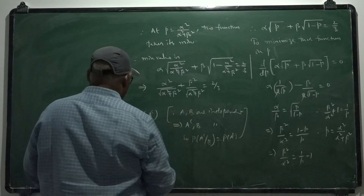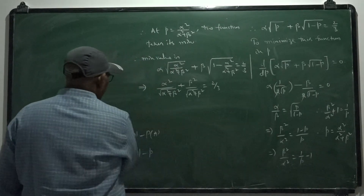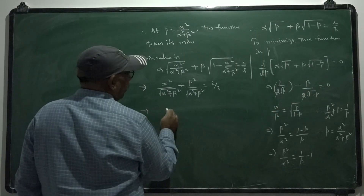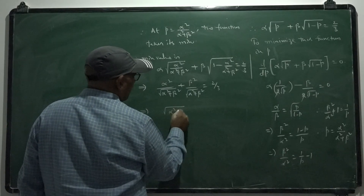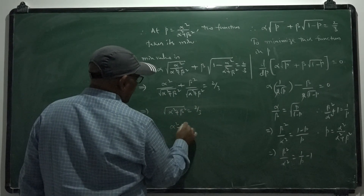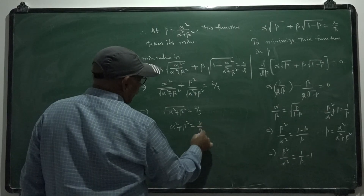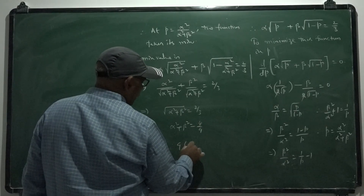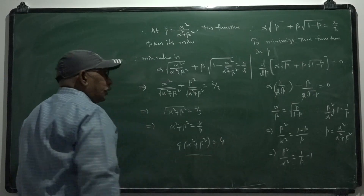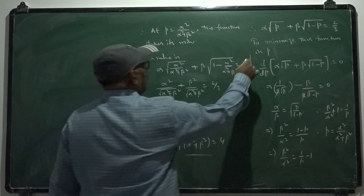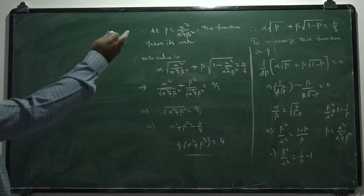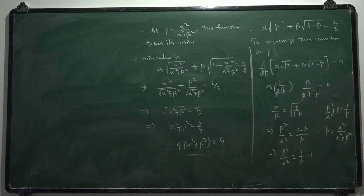Therefore alpha squared plus beta squared equals 4 by 9. Hence, 9 times alpha squared plus beta squared equals 4. That is the required minimum value of 9 into alpha squared plus beta squared.